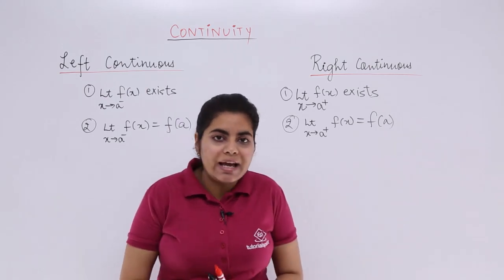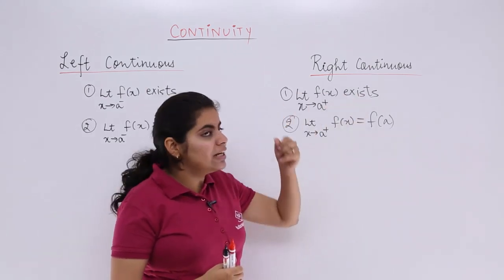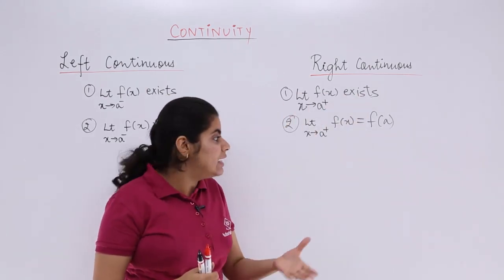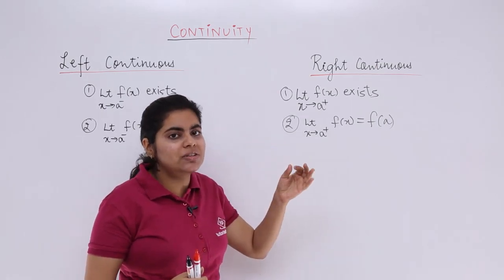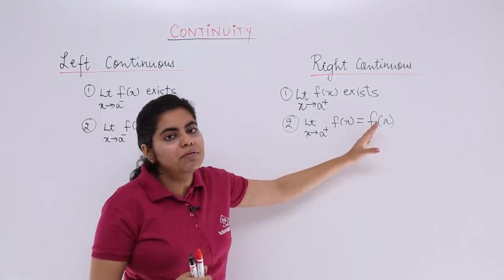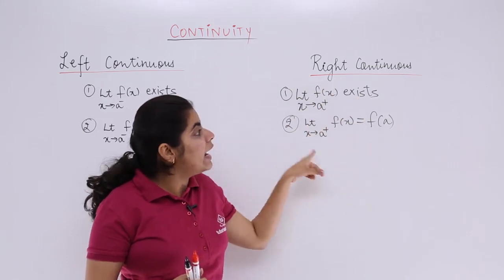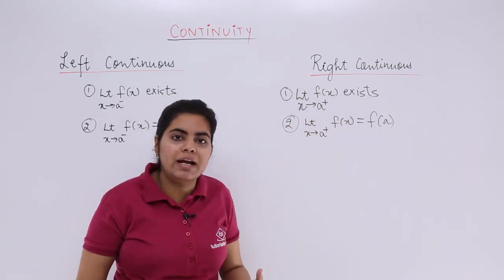Similarly, for a right continuous function, the right hand limit should exist and the right hand limit should be equal to the value of the function. It again does not talk about the left hand limit.